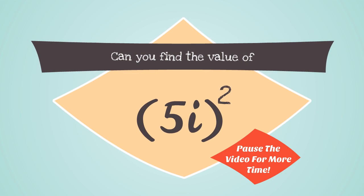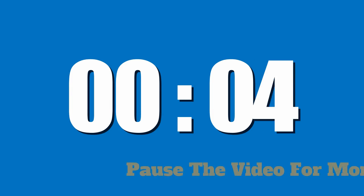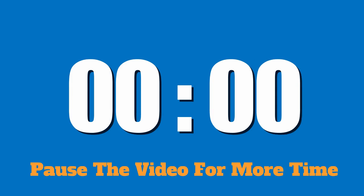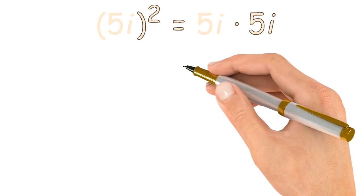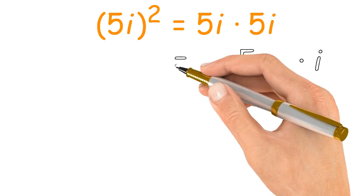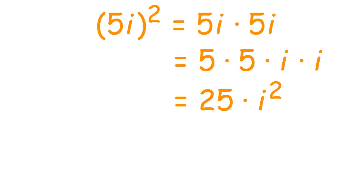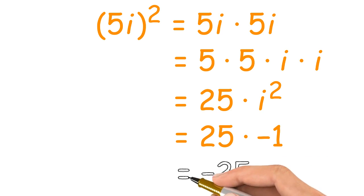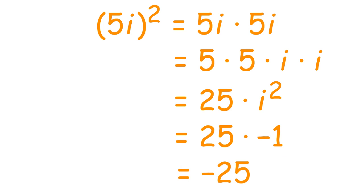Can you find the value of 5i squared? Pause the video for more time. 5i squared can be rewritten as 5i times 5i. We can further rearrange that to get 5 times 5 times i times i. We know that 5 times 5 is equal to 25, and i times i can be written as i squared, so we have 25 times i squared. Since i is the square root of negative 1, when we square that we get negative 1. So we have 25 times negative 1, which gives us negative 25. 5i squared is equal to negative 25.